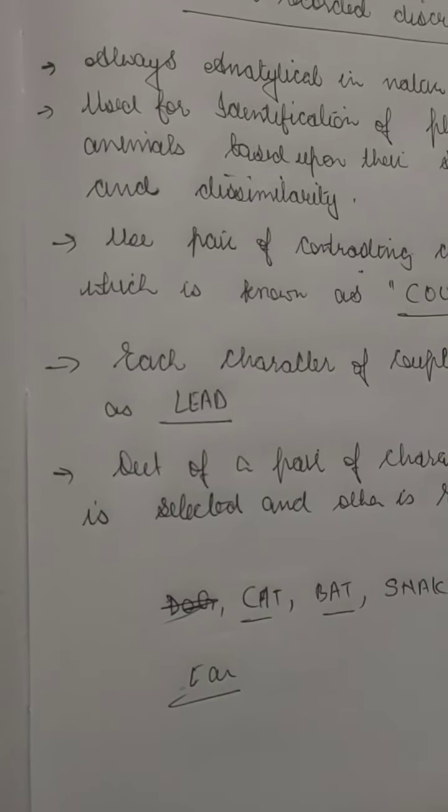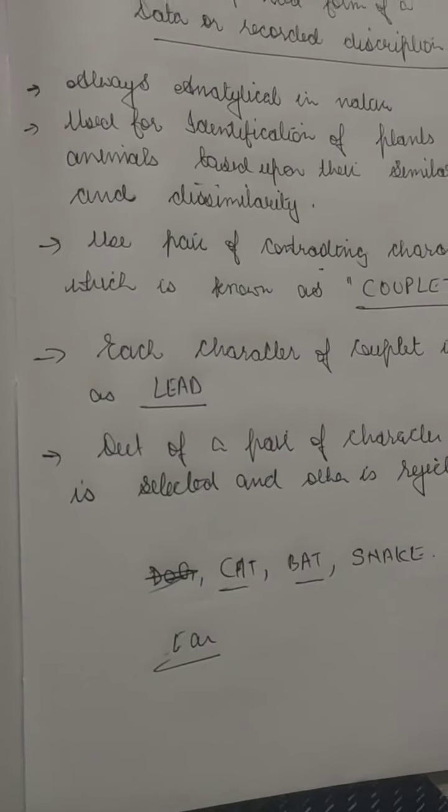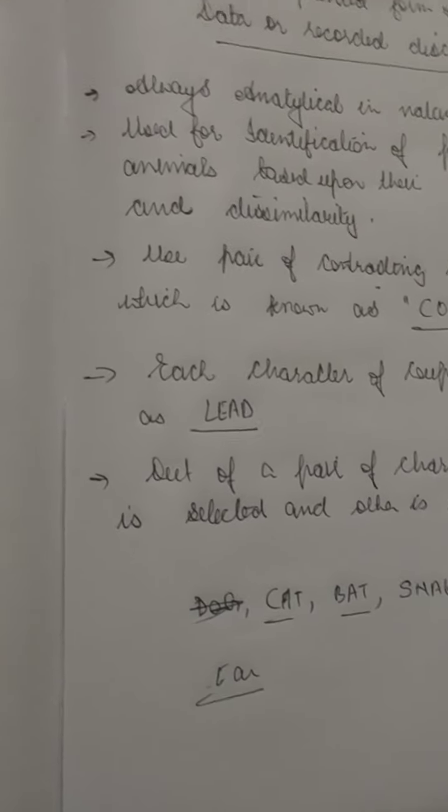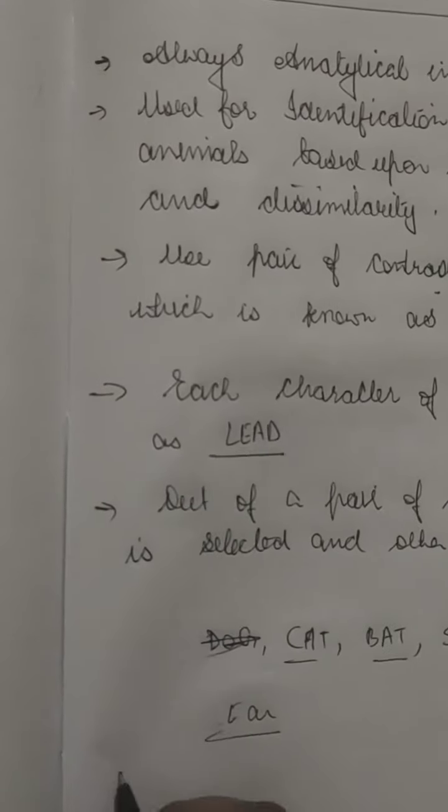The last topic of the chapter covers flora, manuals, monographs, and catalogues. Flora is a recorded description of plants, animals, and other organisms in the form of a book or index. It provides correct identification and descriptions of a variety of living organisms, contains information of plants found in a particular area, and gives an account of the habitat and distribution of various plants.